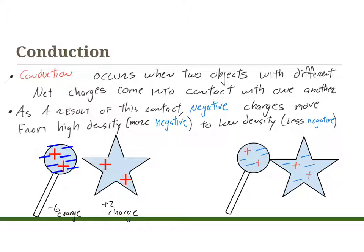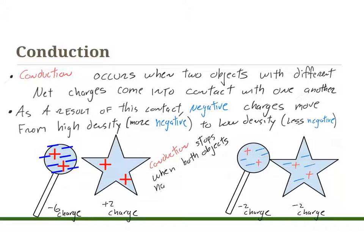What has happened is that the ratio of positive to negative charges is the same, and that's really important to remember. When I look at the new net overall charge for the lollipop, it has two positive things and four negative things, so it's going to be a negative two charge. And the star has a negative two charge as well — four negative things and two positive things. Conduction stops when both objects have the same charge — it doesn't have to be negative, positive, or neutral, it just has to be the same.